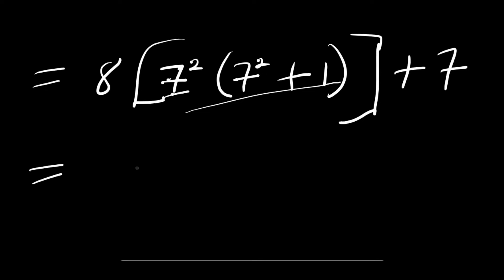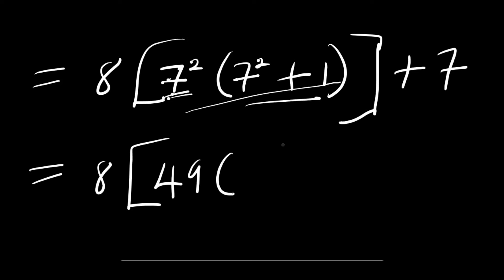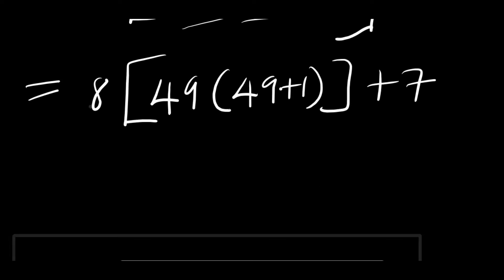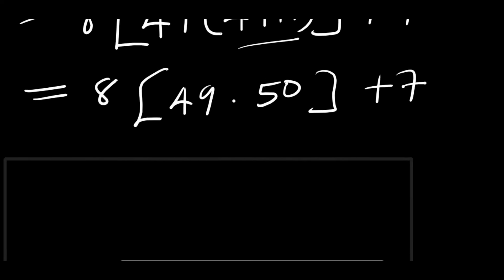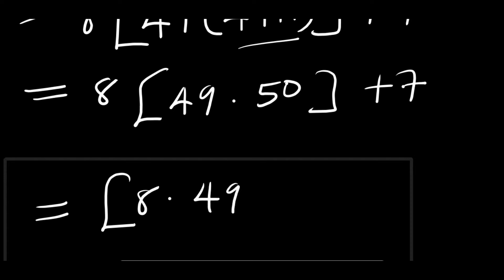The next thing we are going to do: what is the value of 7 power 2? This is 49. So we have 8 times 49 times (49 plus 1), then we have plus 7. This gives us 8 times 49 times 50, then we have plus 7. So we just multiplied everything out.